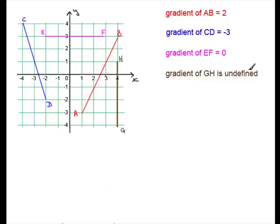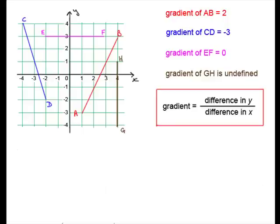Now there's a formula for working out the gradient between two points. That formula is that the gradient equals the difference in the y values divided by the difference in the x values.